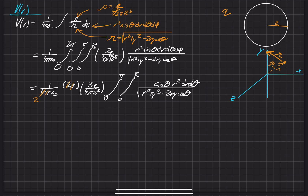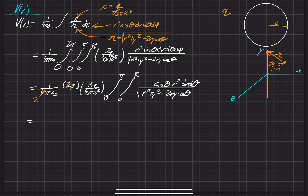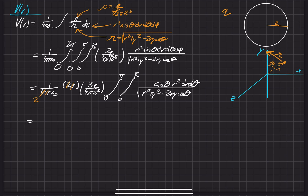At this point, we can do either the theta integral or the r integral. Typically you want to do the easier one first. The easier one right now is the theta integral. I tried this beforehand, and the r integral in its current form is pretty nasty — doing the r integral first actually makes the theta integral even harder, which we don't want. So we'll go ahead and do the theta integral first.